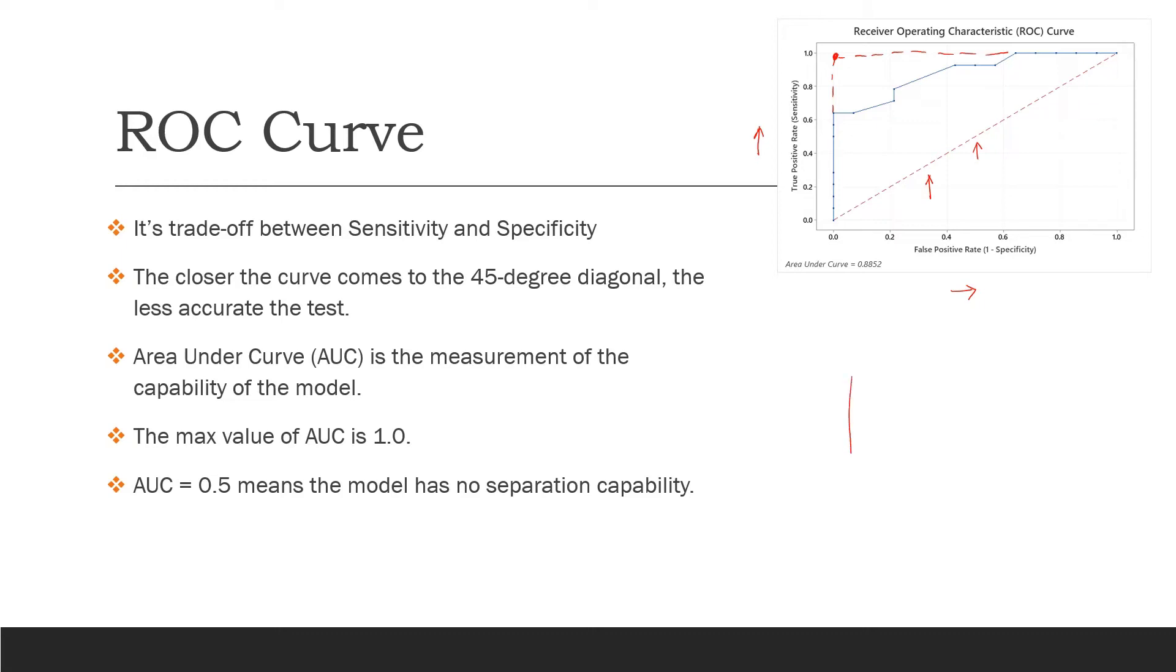If you see here, the sensitivity is 1 and 1 minus specificity is 1 here. If your ROC curve is something like this, then the area under this curve will be 1 unit. This is the maximum area which a curve can have.